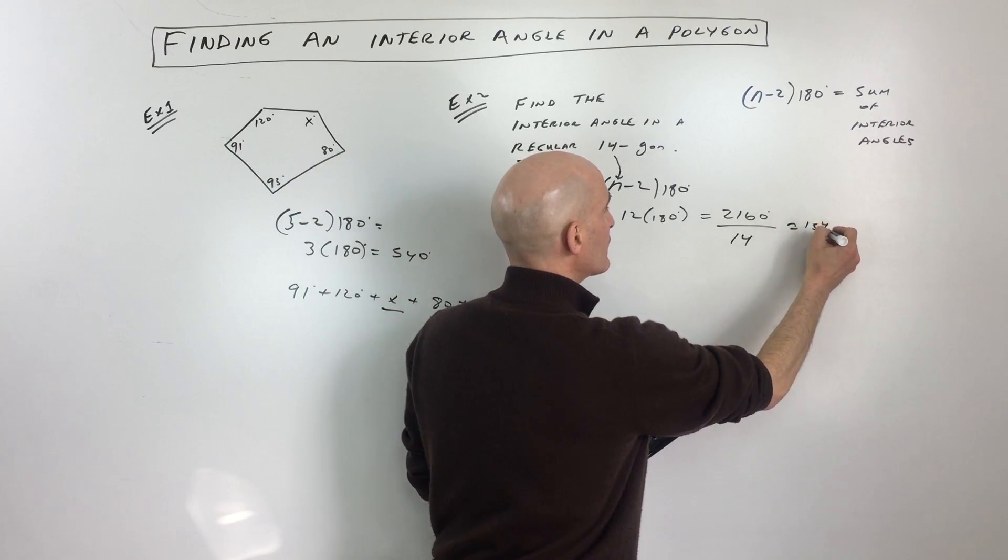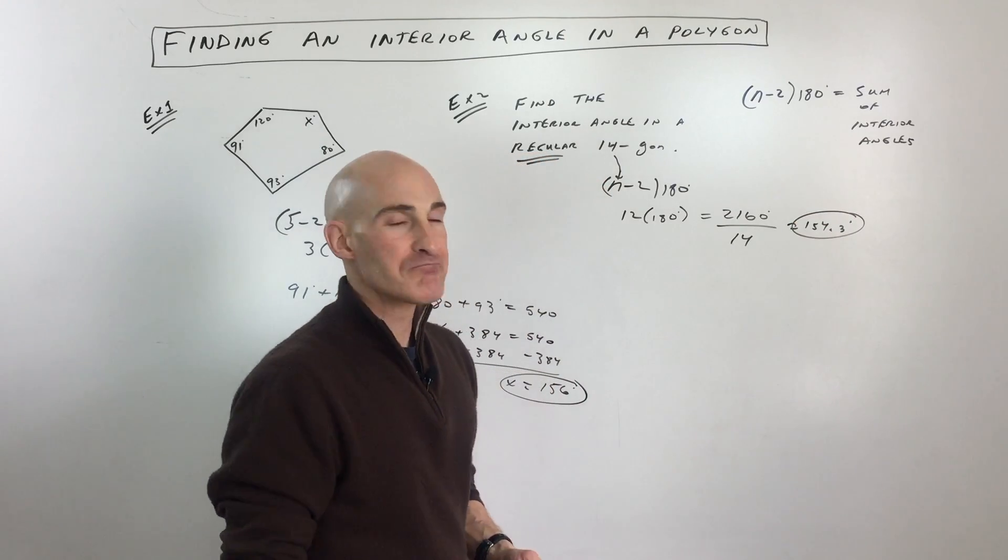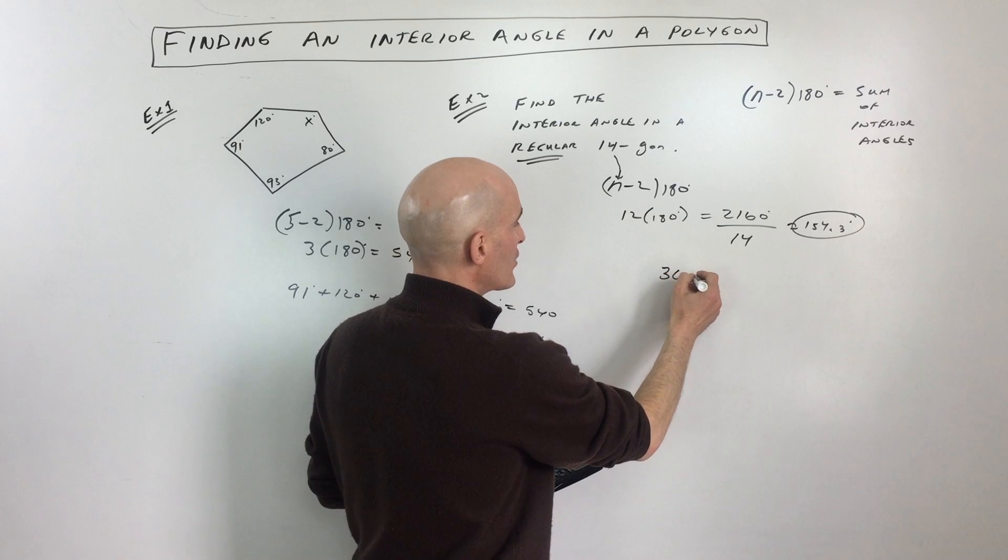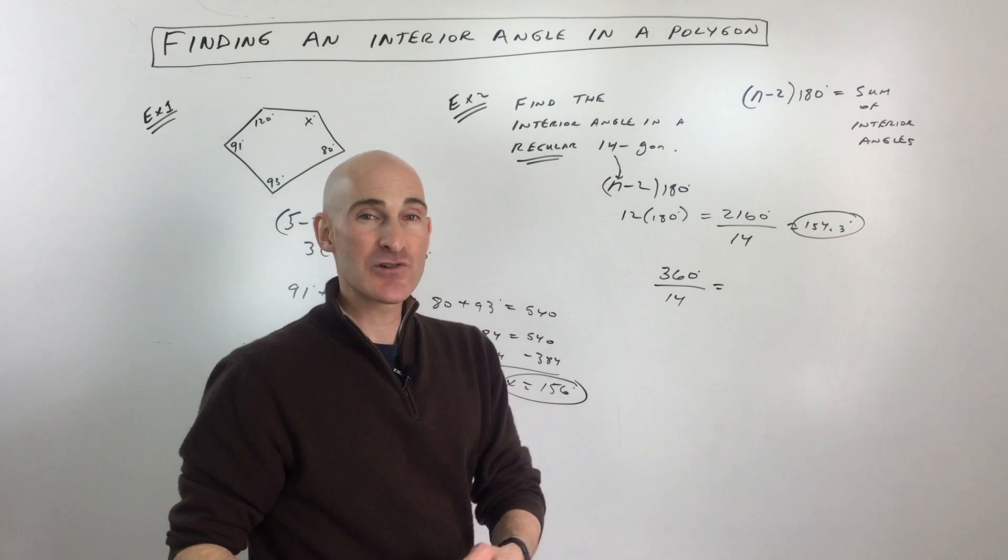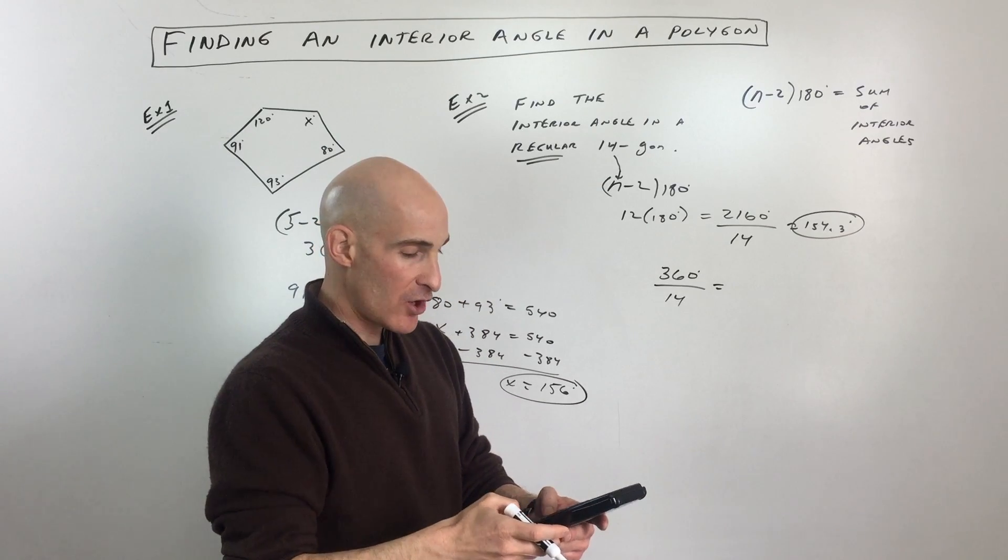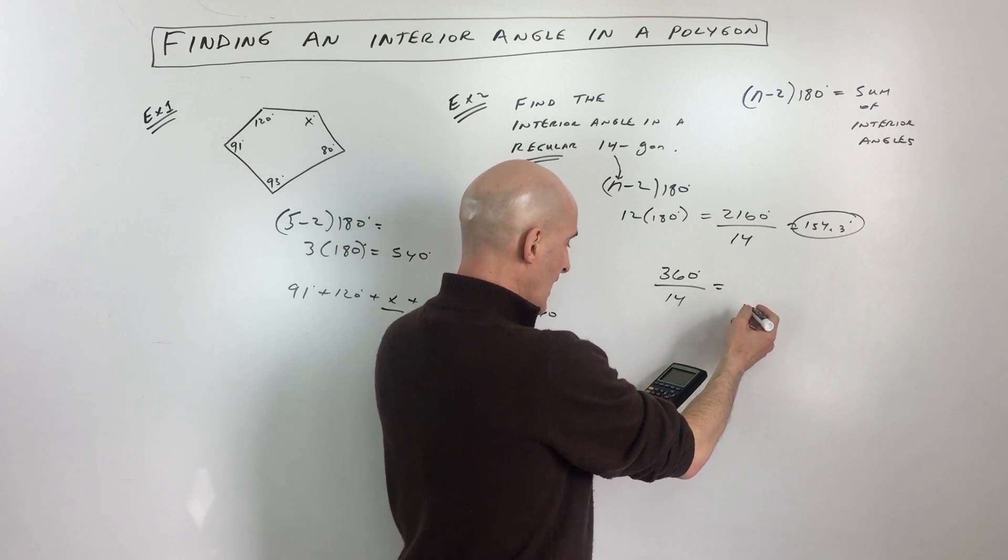It's about 154.3 degrees. The other way to do this problem is you can use the formula 360 divided by n, or divided by 14. This will give you the measure of the exterior angle, because all the exterior angles always add up to 360 in a polygon like this.